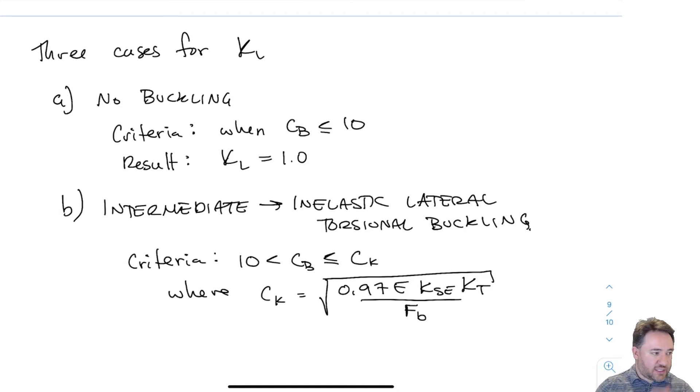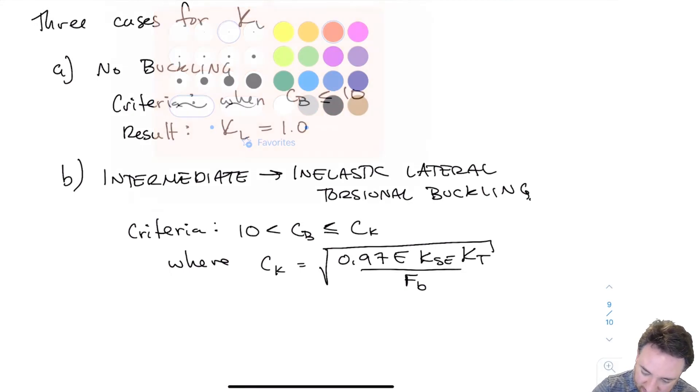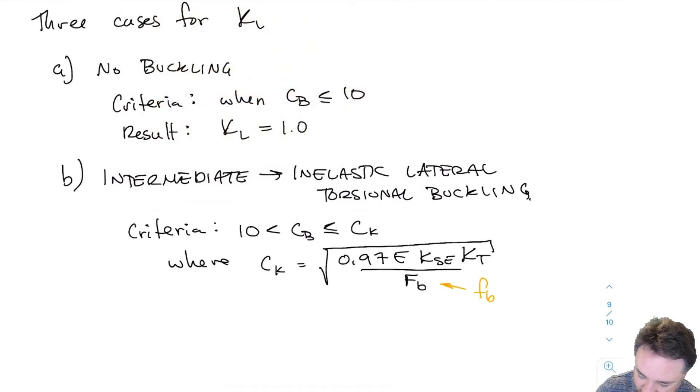That's why here we have an equation bounded by 10 on one side, below which we had no buckling, and a parameter CK, which is the slenderness at which we transition between inelastic and totally elastic lateral torsional buckling. The strength FB appears here, indicating inelastic effects are happening.